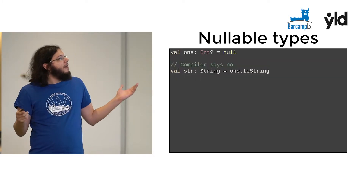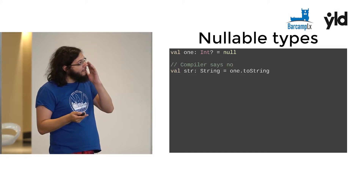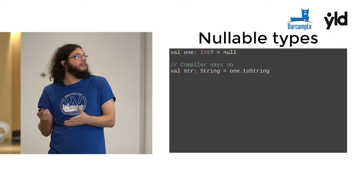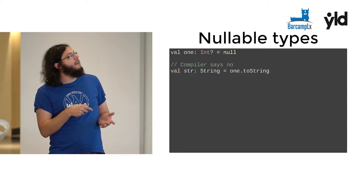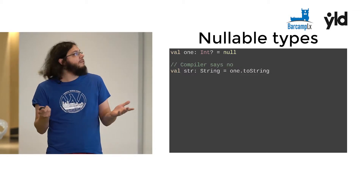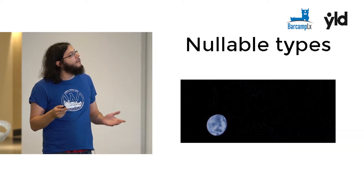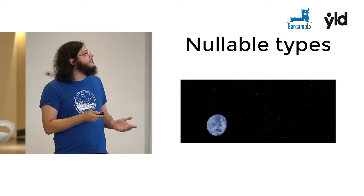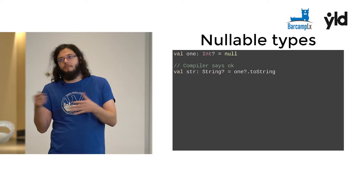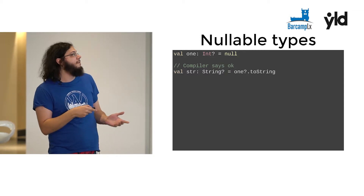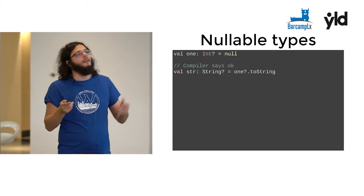Everybody has had a null pointer exception or some kind of null error blowing up a program. One thing that already exists in some languages is explicitly declaring which types are nullable. So in this case, 'one' is maybe an int or null because it has a question mark, and then you can assign null to it. If it didn't have the question mark, you couldn't assign null and the compiler would catch that. As I try to invoke a method on it, the compiler says no, because it might be null and blow up. You can still call methods using the Elvis operator, which means 'if not null, do this' — so you don't need a lot of boilerplate if your language covers that for you.